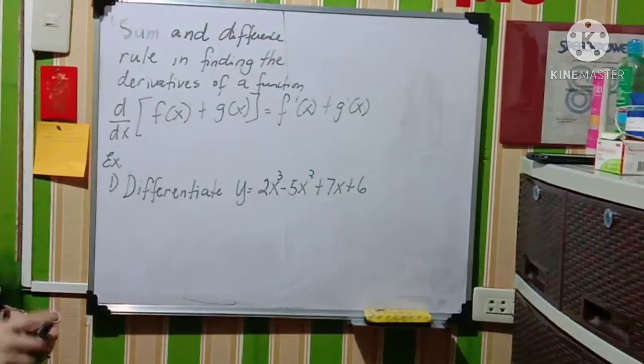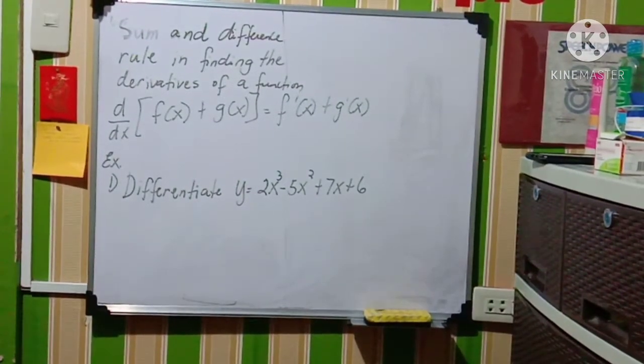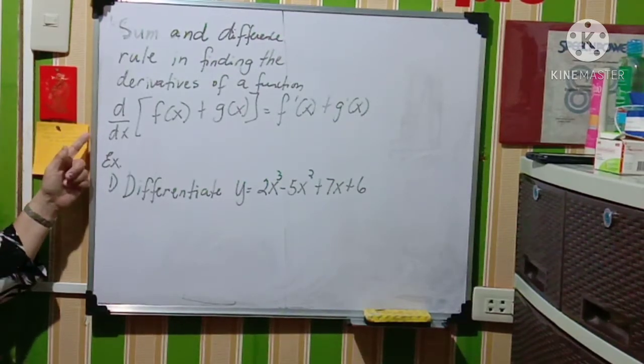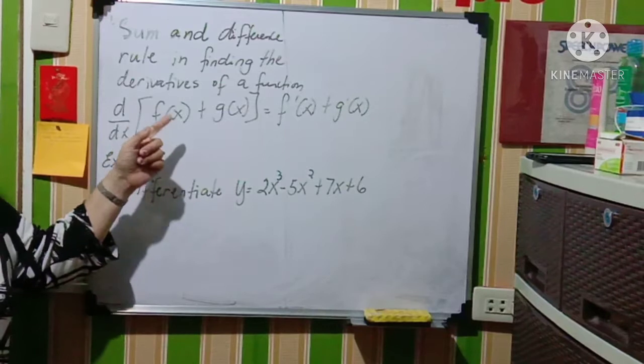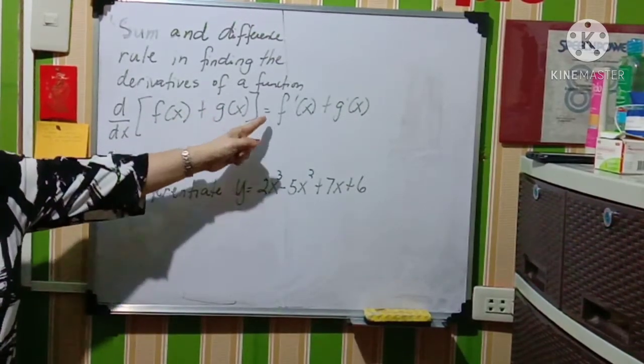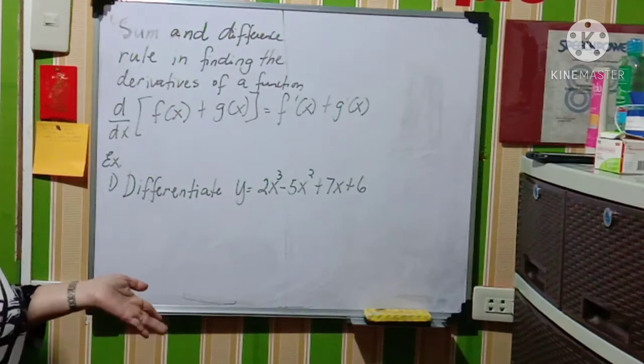Sum and difference rule in finding the derivatives of a function. The definition of this is d over dx of the quantity f of x plus g of x is equal to f prime of x plus g prime of x.